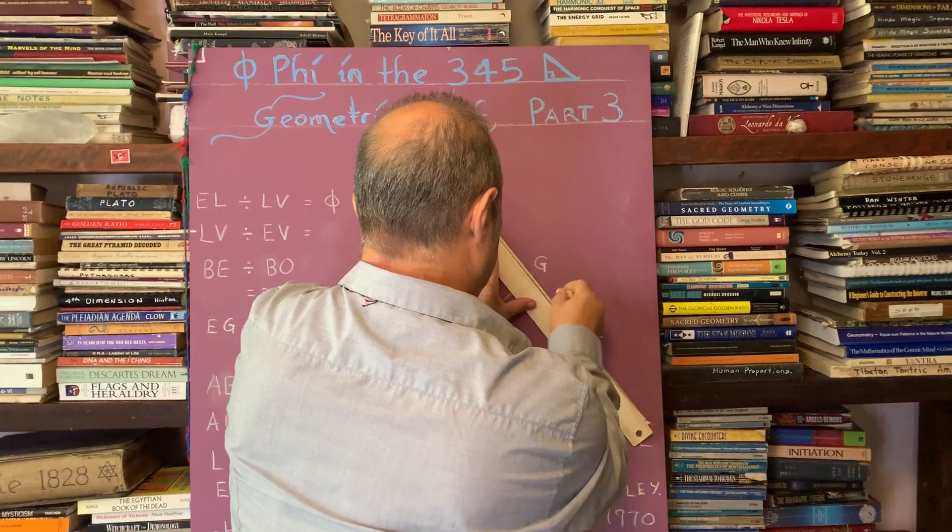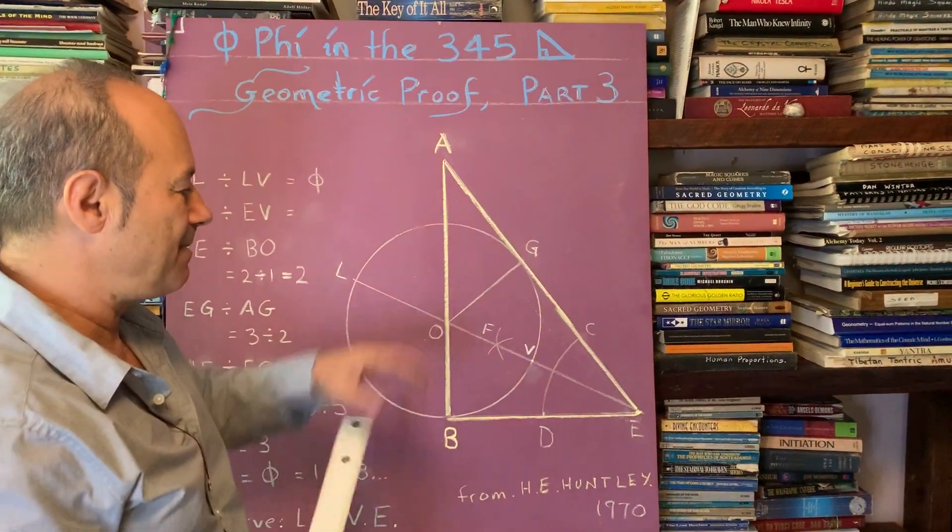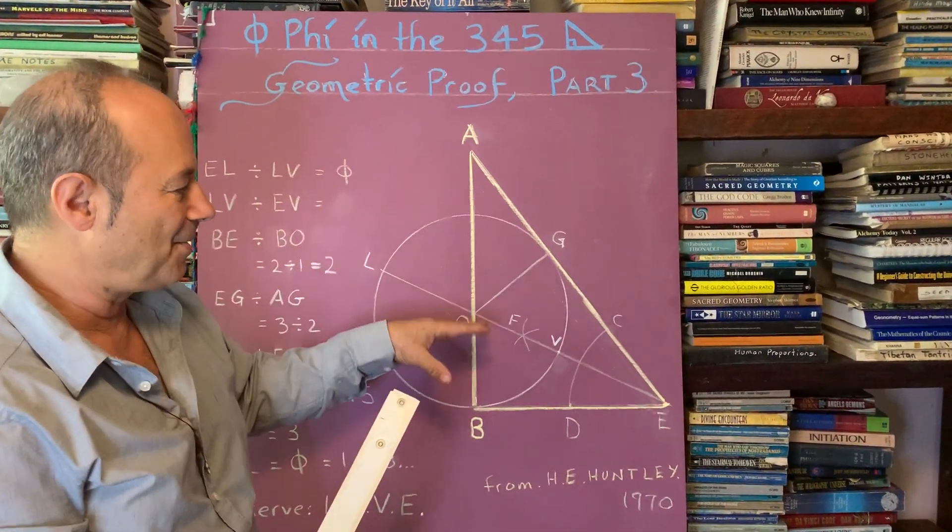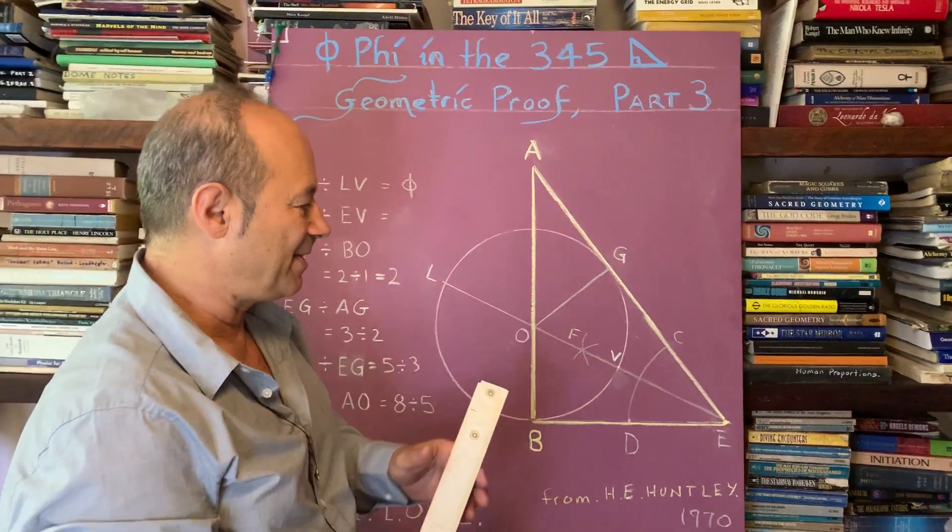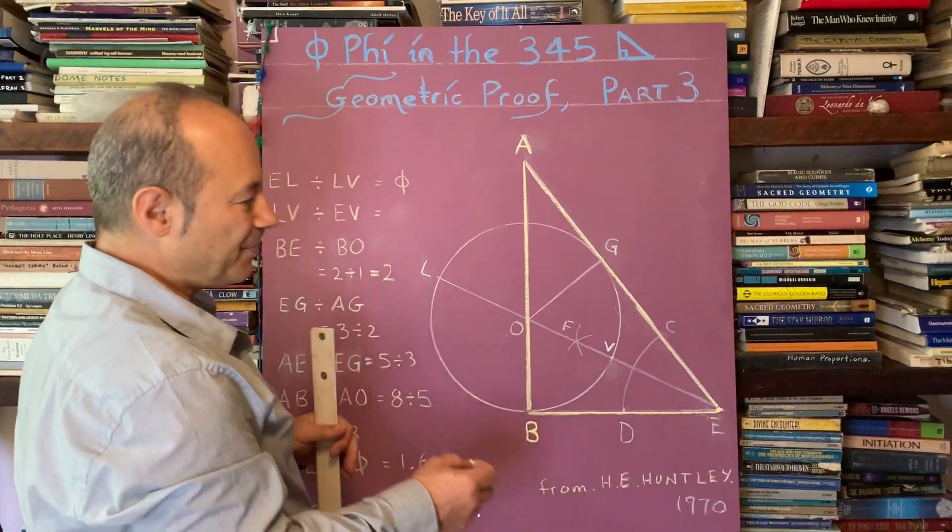We know that Pythagoras studied 22 years in ancient Egypt before he set up his school in Greece and Cretona and in Italy as well. So this is one of the keys to constructing the universe. The 3-4-5 triangle is equally important as the golden ratio. Now we're going to learn how to get the golden ratio in this humble 3-4-5 Pythagorean triangle.